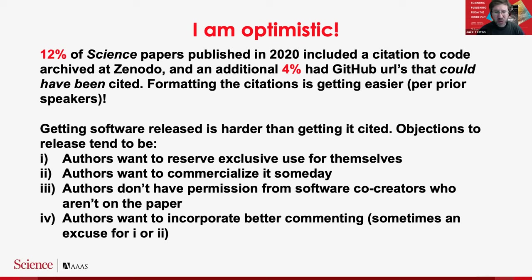My experience has been that getting software released in the first place is harder than getting it cited. Once we're dealing with authors who are prepared or even eager to release their software, telling them to cite it has been relatively straightforward, especially because of the already existing GitHub-to-Zenodo integration. The typical objections we get to authors wanting to release their software — which is of course a prerequisite to citing it — are: they want to reserve exclusive use, they want to commercialize it someday, they don't have permission from co-creators, or they say they want to incorporate better commenting.